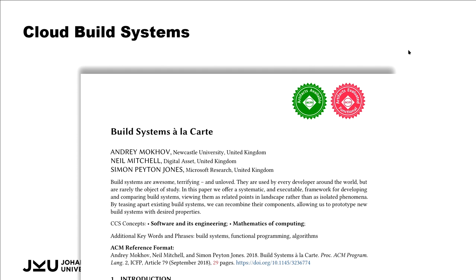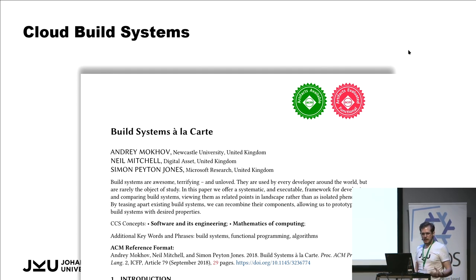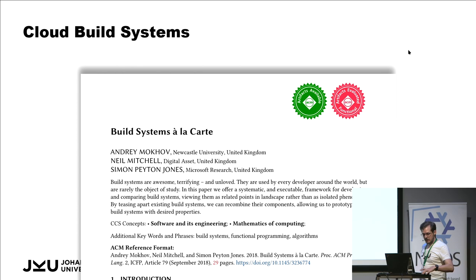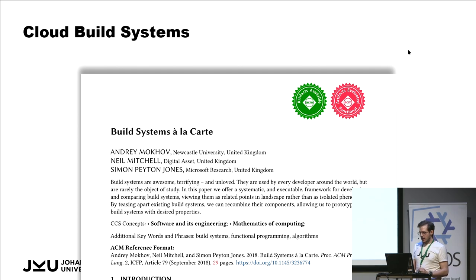There's this great paper called Build Systems à la Carte, and what it does is it takes existing build systems, analyzes them, and puts them into categories. This paper discovers a specific category called cloud build systems, and Nix, among a few others, actually belongs to that category. We're going to look at the definition of that category and try to analyze Nix from that perspective to see what we can learn about hashing.